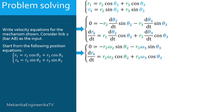In these equations, theta 2 and omega 2 are given, as link 2 is the input. Also, theta 3 is known, as the position problem should be solved before the velocity problem. Thus the two unknowns are omega 3 and d R4/dt.